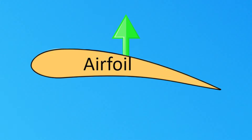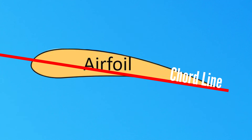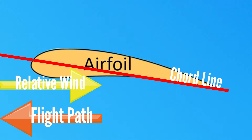The angle of attack is the angle between the chord line — an imaginary straight line between the leading edge and the trailing edge of an airfoil — and the relative wind, the direction of movement of the air relative to an airfoil. It is the opposite direction of movement of the flight path.